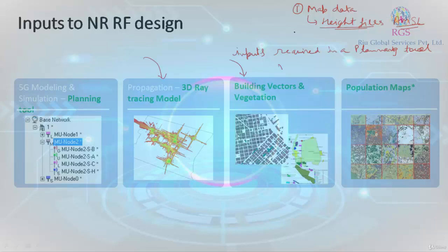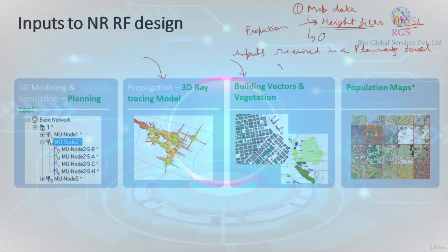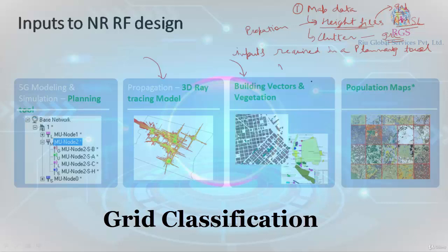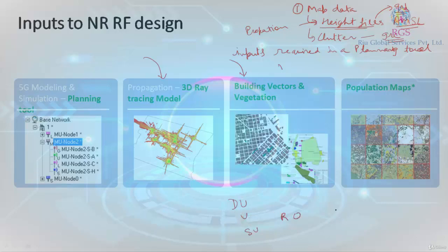The height files are the most important files because they contribute directly into your propagation calculations — how much signal strength you will be expecting. In Planet, the map data files are called GRD (Grid Determinate) and the clutter files are called GRC (Grid Classification). As the name suggests, classification tells you about dense urban, urban, suburban, rural, open areas, industrial areas, airports, water bodies, and so on.